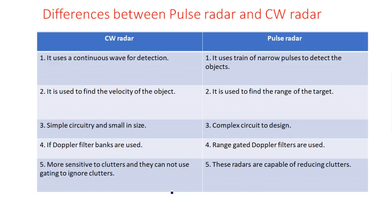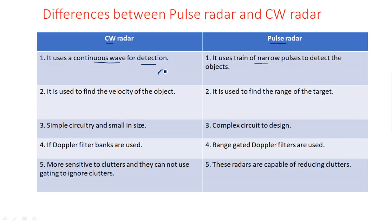Now let us move to the second topic: the differences between pulse radar and CW radar. Pulse radar is used to find range and CW radar is used to find velocity. The name of the radar system is given based on the type of waveform it emits. CW radar emits a continuous wave; pulse radar emits a pulse-modulated signal — narrow pulses. So CW radar uses a continuous wave for detection of targets, while pulse radar uses a train of narrow pulses to detect objects.